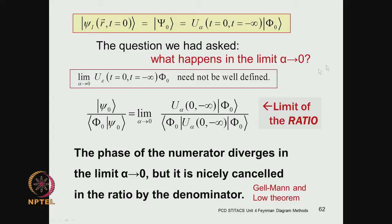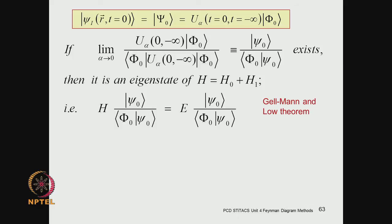What happens is that there is a phase factor and you get certain divergence in the numerator, if you were to treat this separately; and there would be a corresponding divergence in the denominator as well — and they happily cancel each other when you take the ratio. Now let us begin with the statement of the Gelman and Lowe theorem and look at this whole thing as a vector. When this operator operates on a vector, you get a new vector, which is shown in the red-colored ket.